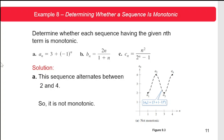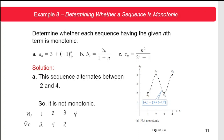For example, suppose we are asked to determine whether each sequence is monotonic. For letter A, the n-th term is a_n = 3 + (−1)^n. If n = 1, then a₁ = 3 + (−1)¹ = 3 − 1 = 2. If n = 2, then a₂ = 3 + (−1)² = 3 + 1 = 4. If n = 3, a₃ = 3 − 1 = 2. If n = 4, a₄ = 3 + 1 = 4.